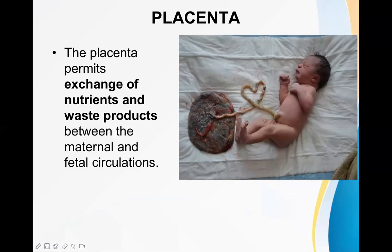The placenta permits the exchange of nutrients and waste products between the maternal and fetal circulation. During pregnancy, the baby is developing inside the uterus and needs a blood supply, while also producing waste products that must be exchanged. Without placenta, the baby cannot grow inside the uterus and life there would be impossible.